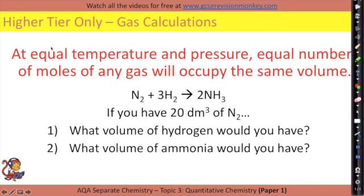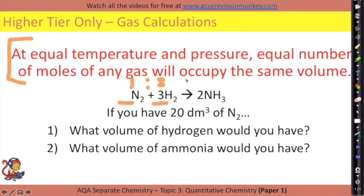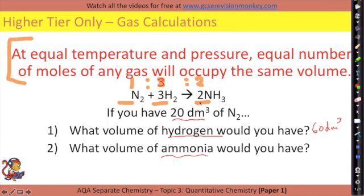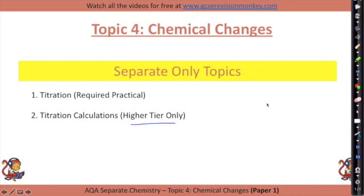This is no coincidence: 44 ÷ 44 = 1 mole. The rule is: one mole of any gas at room temperature and pressure occupies 24 dm³. Also, at equal temperature and pressure, equal numbers of moles of any gas occupy the same volume. So from a balanced equation you can read mole ratios. For example, in the Haber process: 1 mol N₂ to 3 mol H₂ to 2 mol NH₃. If you have 20 dm³ of nitrogen, you'd need 60 dm³ of hydrogen and produce 40 dm³ of ammonia.